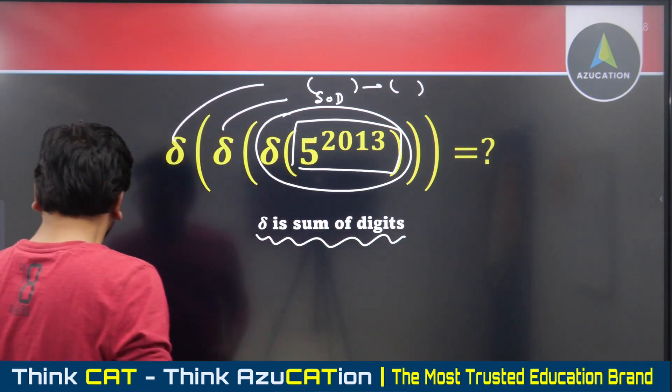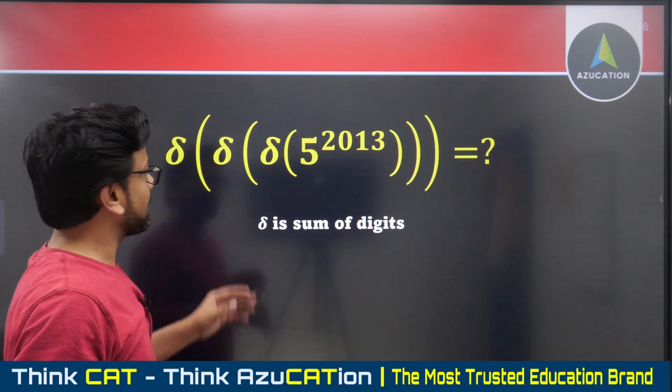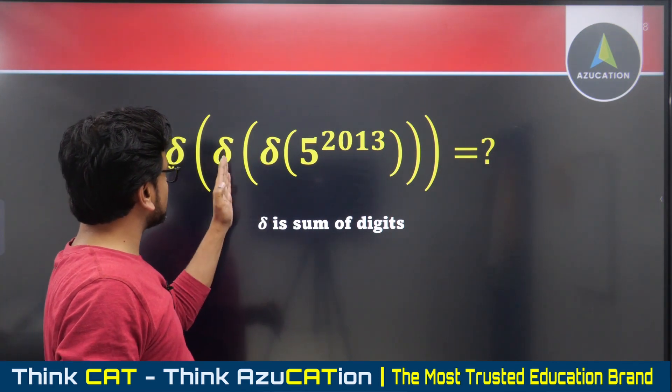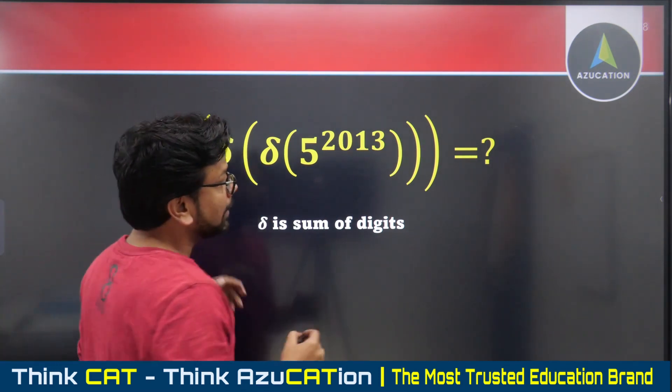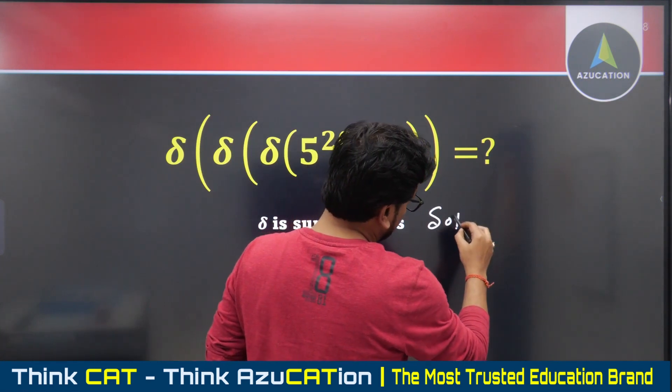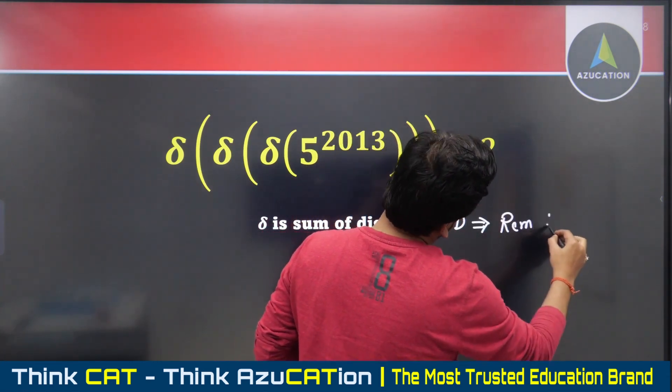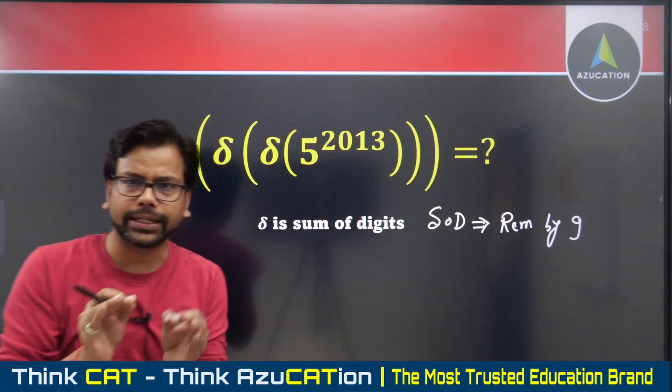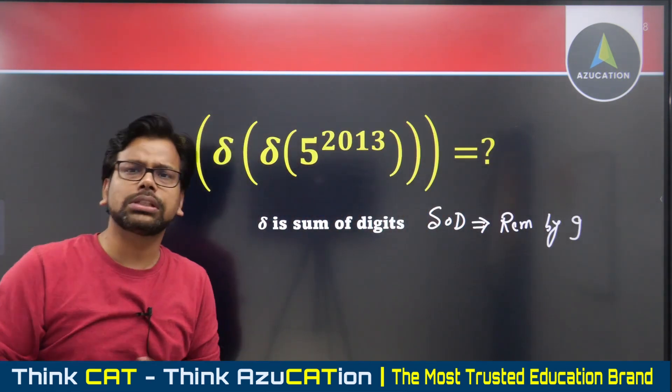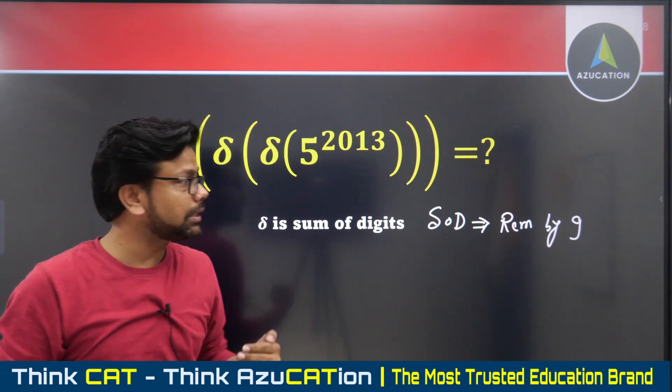Let's solve this question. Generally, when you see questions with sum of digits, then sum of digits, then sum of digits - whenever you have sum of digits, it has only one meaning: remainder by nine. Because nine is the only operator in remainder theorem which works on the sum of digits.